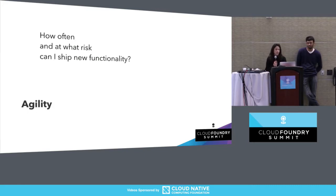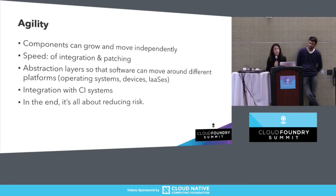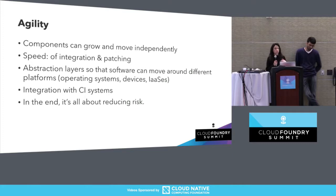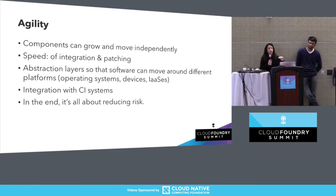The second question is: how often and at what risk can I ship new functionality? Or in other words, how can I move fast without breaking things? This is where agility comes in. Agility is all about allowing components to grow and move independently from each other, tying back to speed of delivery, speed of integration, and speed of patching. A common implementation is introducing layers of abstraction so that software can move around freely on either side.